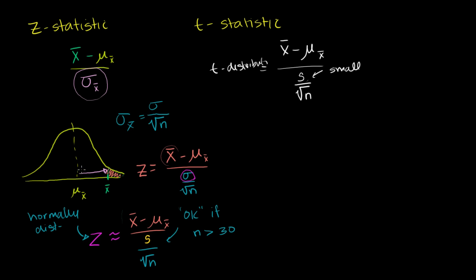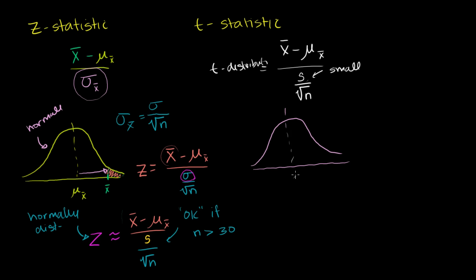You do the exact same thing as before, but now you assume the bell curve is no longer a normal distribution — the z's are normally distributed, but in a t-distribution you have a normalized t-distribution with a mean of 0. You want to figure out the probability of getting a t-value at least this extreme, and you find the area under the curve right over there.